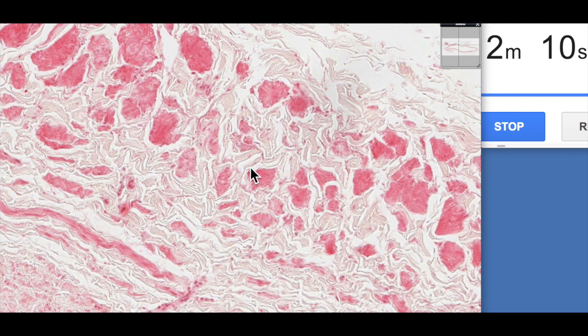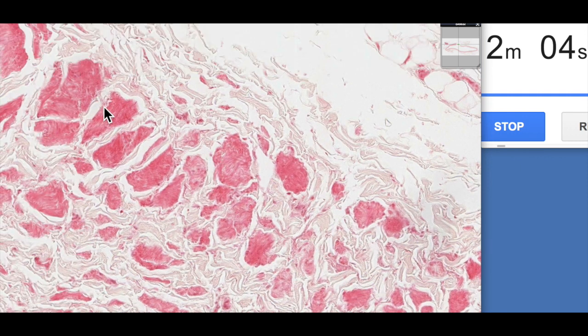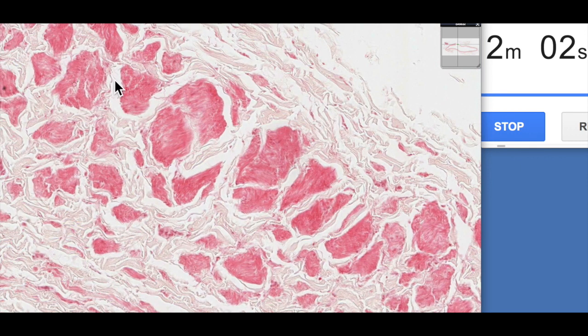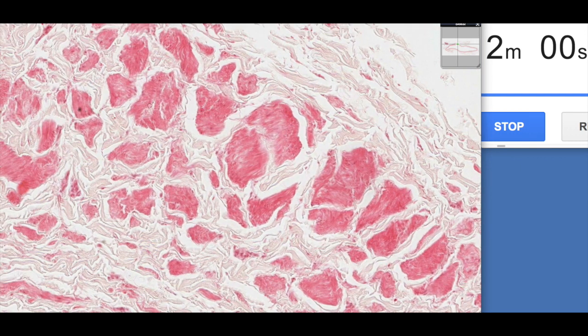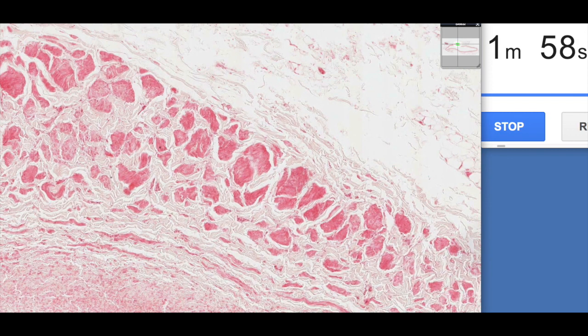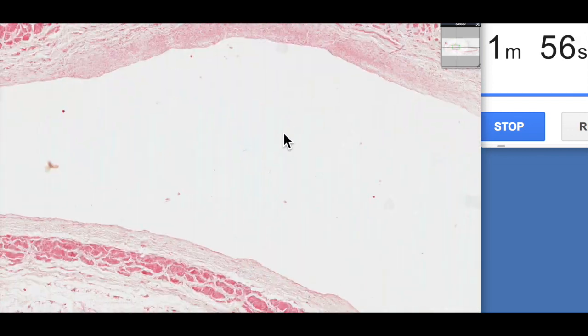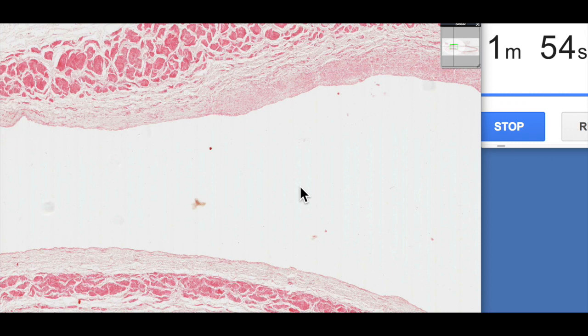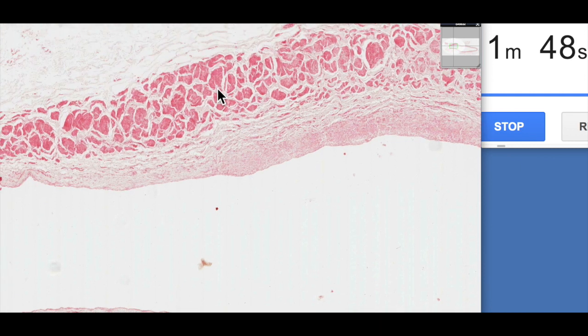Most of our blood vessels have their smooth muscle within the tunica media but the vena cava has it in the outer tunica adventitia and it's usually longitudinally arranged. The reason for this is that the blood pressure within the vena cava is really low and so in order to help the blood return to the heart, we get this peristaltic contraction of this smooth muscle within the tunica adventitia.